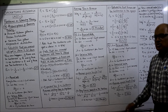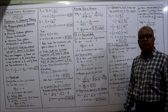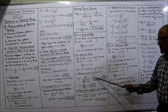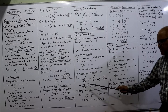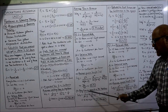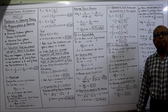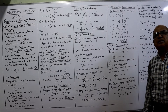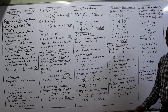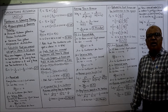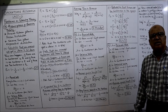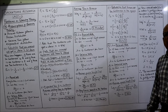Average queue length: Lq = λ² / [μ(μ − λ)] = 6² / [10 × (10 − 6)] = 36 / 40 = 0.9 customers. Average time in the system: Ws = 1/(μ − λ) = 1/(10 − 6) = 1/4 = 0.25 hours. Convert to minutes: 0.25 × 60 = 15 minutes.